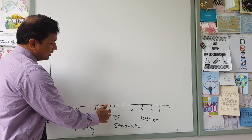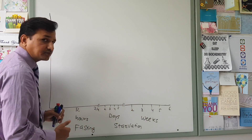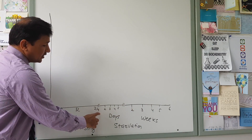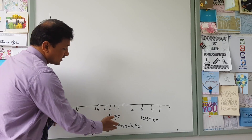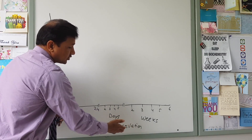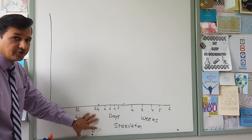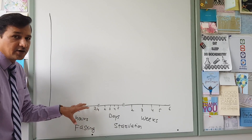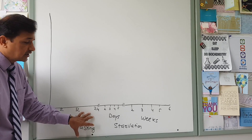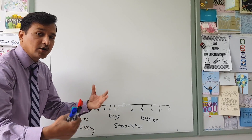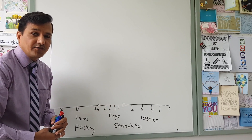After 24 hours, we move into days and then weeks. Anyone who is not taking food for more than 24 hours gets into starvation — that is what is referred to as starvation. Fasting is within 24 hours of not taking anything. If you don't take anything for more than 24 hours, that is basically referred to as starvation.